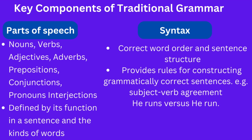Traditional grammar emphasizes the importance of correct word order and sentence structure and provides rules for constructing grammatically correct sentences. For example, it emphasizes the importance of subject-verb agreement, such as 'he runs' versus 'he run,' or 'I am' versus 'I are.' The correct syntactic structure is 'I am' and 'he runs.' We know these are correct because traditional grammar prescribes rules that tell us what rules speakers have to follow.